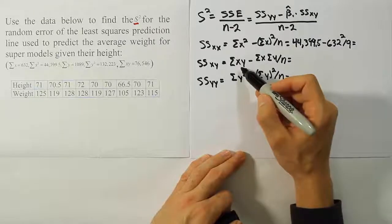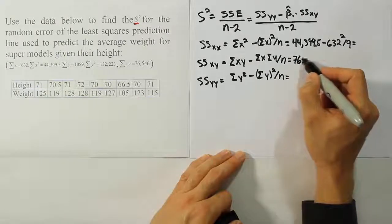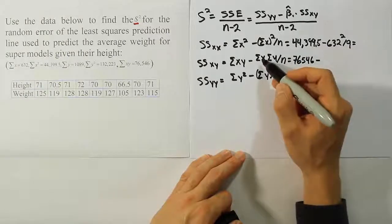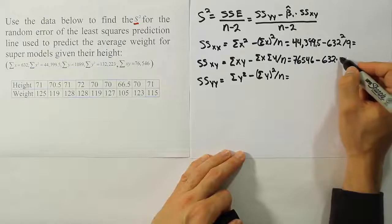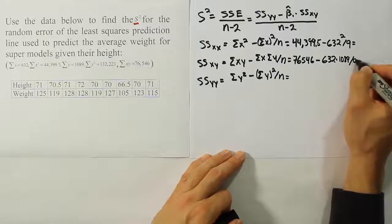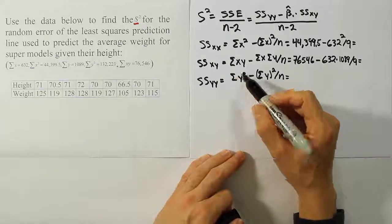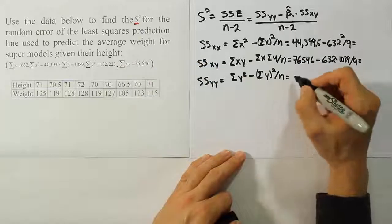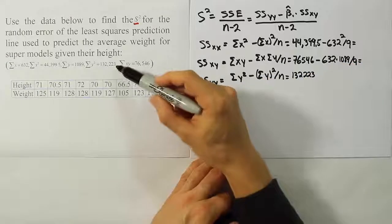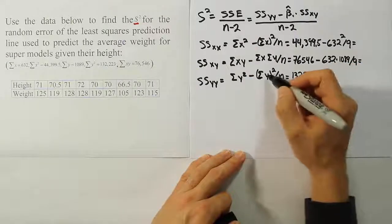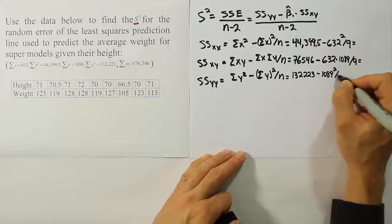Let's go ahead and do the next one, filling in the numbers. So we have 76,546 minus the sum of X times the sum of Y, that's 632 times 1,089 divided by 9. And then we're going to do the summation of Y squared. That value is 132,223. That's the summation of Y squared minus the summation of Y quantity squared, that's going to be 1089, 1089 squared divided by 9.